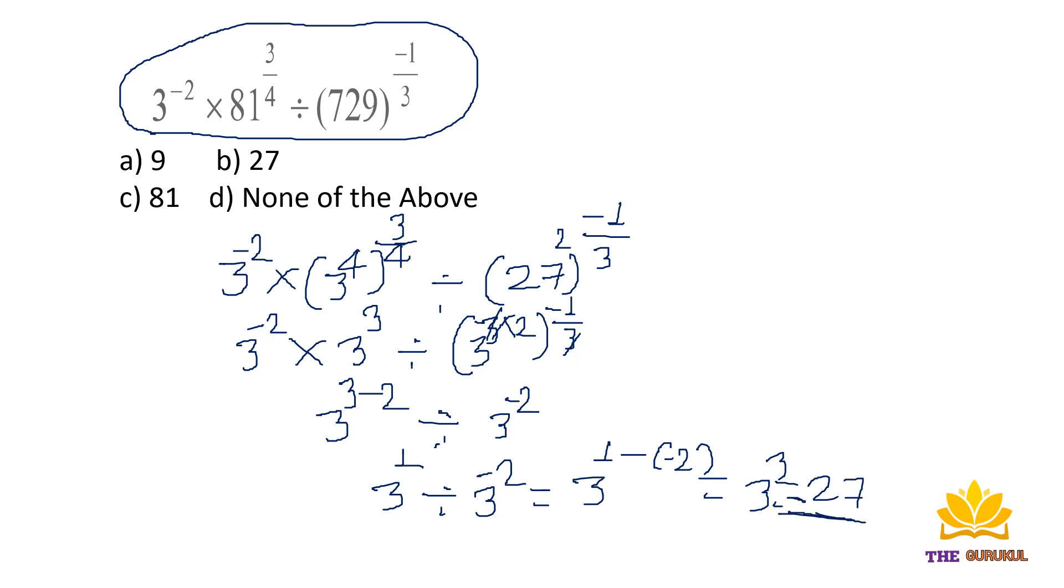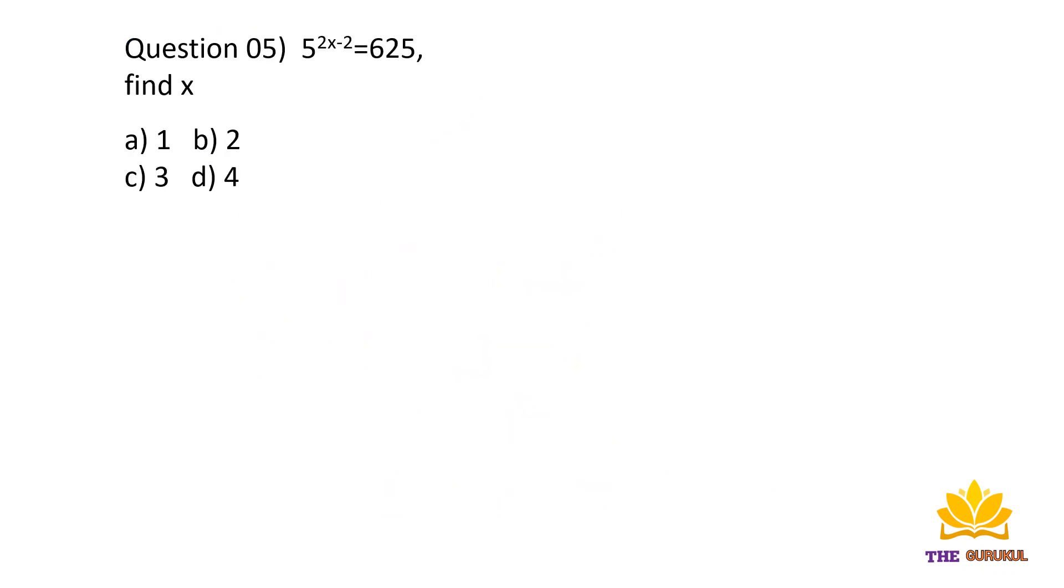Last question: 5 raised to power 2x minus 2 equals 625. Find x. We write 625 as 5 to the power 4.